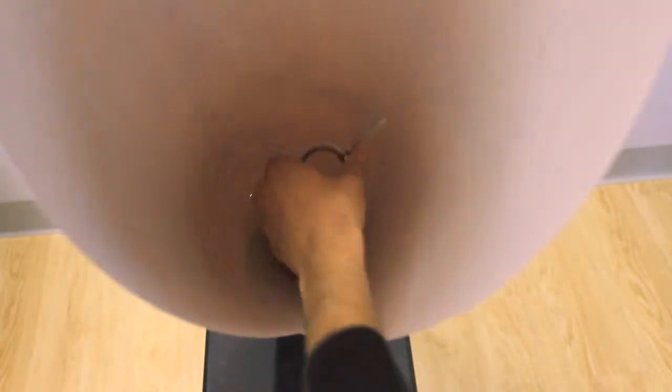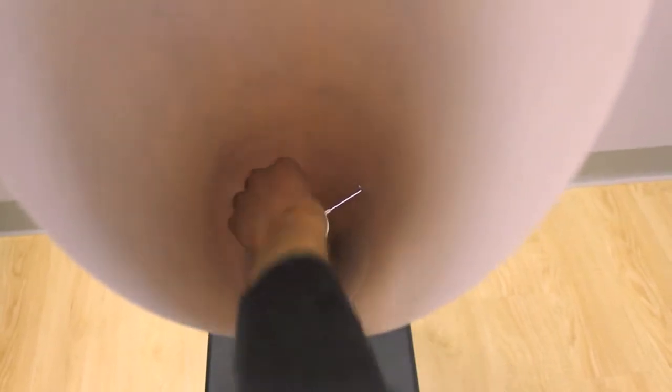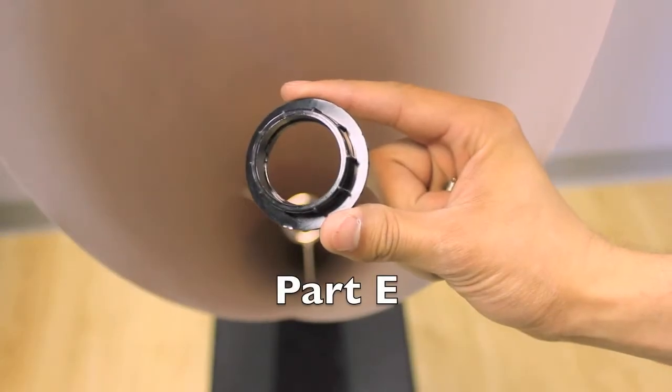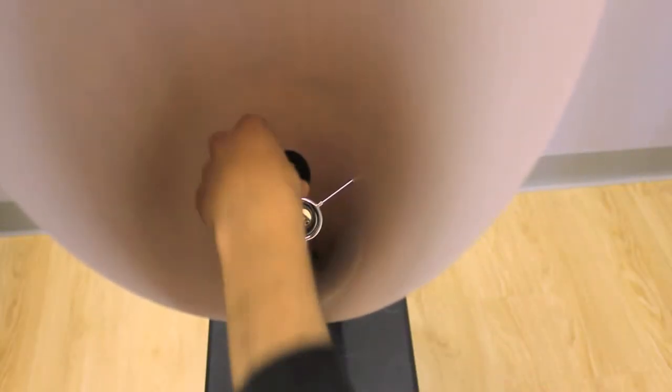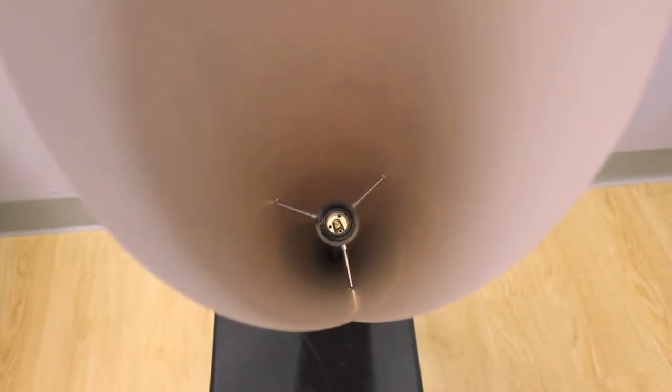Place Part F over the light socket inside the lampshade and align the three rods with the three holes. Take Part E and thread it onto the light socket to secure Part F. Make sure Part F is still aligned with the open holes.